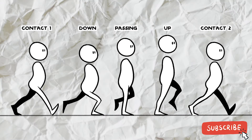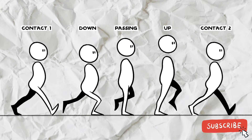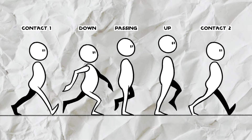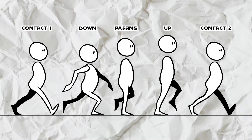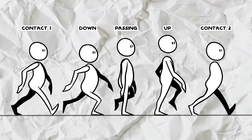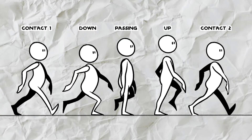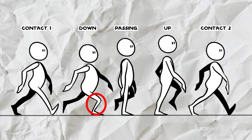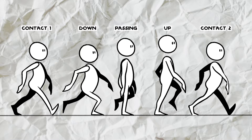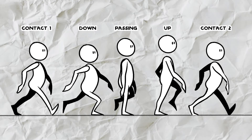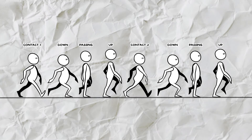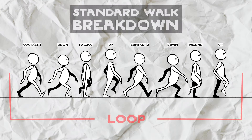To add in the arms there are some key points you can use. The arm swing will be the widest in the down position and the arms will be alongside the body in the passing position. Remembering that in a standard walk the arms will swing opposite to the legs — so when the right leg is forwards the right arm will be swinging backwards. To complete this eight frame cycle we just copy over the down, passing and up positions, making sure to flip the arms and legs.